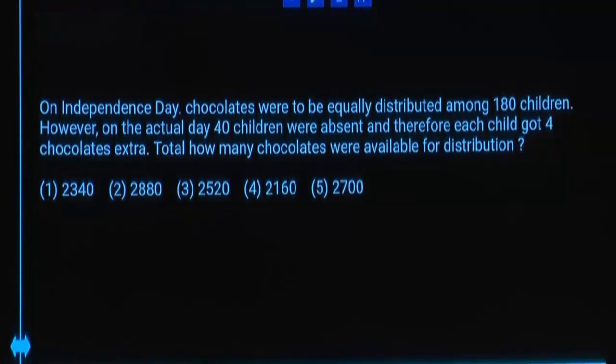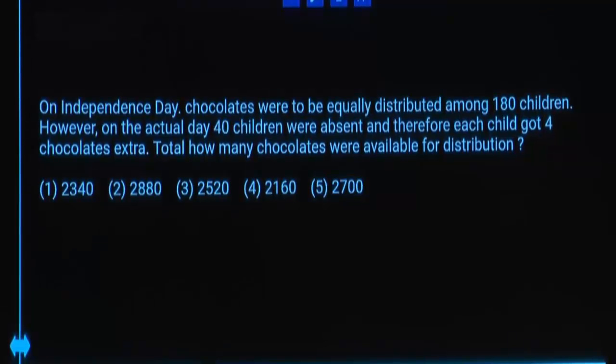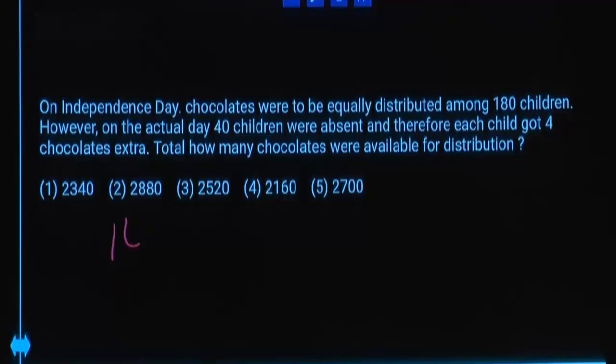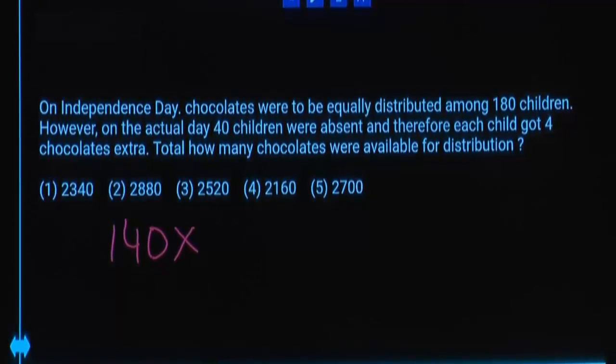How many students are there in school? 180. But how many were absent? 40. That means how many were present? 140. So these 140 students got 4 chocolates extra. That means extra chocolates distributed to 140 students is going to be 140 into 4.